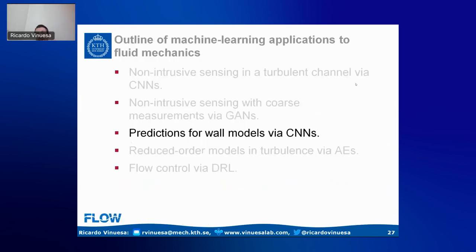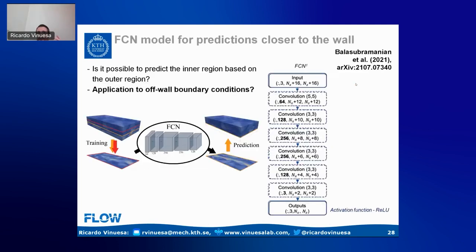The next application goes in the opposite direction — instead of going from the wall to above the wall, we consider using information from above the wall to predict something closer to the wall. This could be applied for wall modeling. This study is published on arXiv, and what we want to assess is whether using outer flow information we can develop something helpful for off-wall boundary conditions — potentially replacing the whole near-wall region with a wall model.